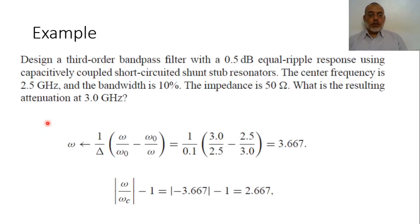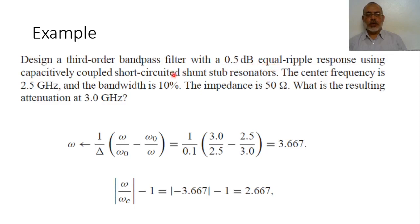In the previous video, we started capacitively coupled short-circuit shunt stub resonators. Now, in this video, we are going to introduce an example for designing such a filter. It is required to design a third-order bandpass filter with 0.5 dB equal-ripple response using capacitively coupled short-circuit shunt stub resonators.